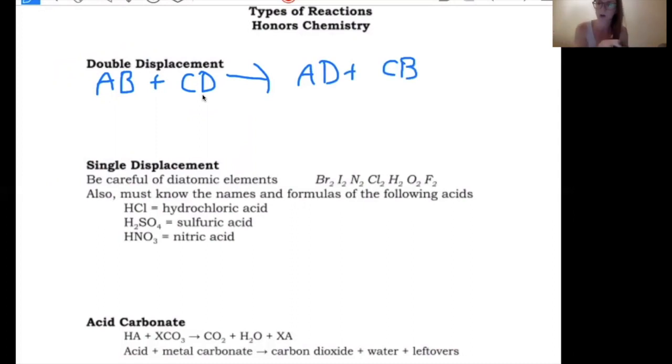If you need a refresher, if this doesn't ring a bell, go back and watch that video. I'll have it linked in the classwork doc. This is called double displacement because we have two things, A and C, that are displacing each other, that are pushing each other out of the way. What separates how you're going to know something is a double displacement reaction is that we start with two compounds.